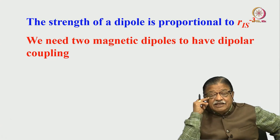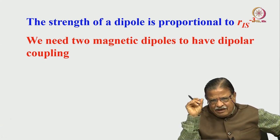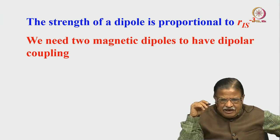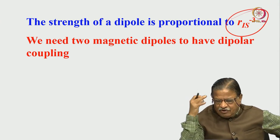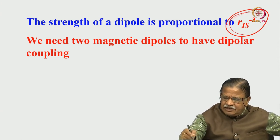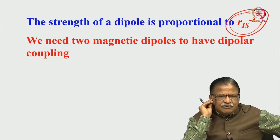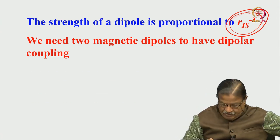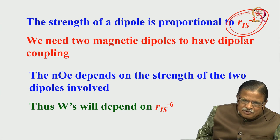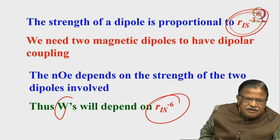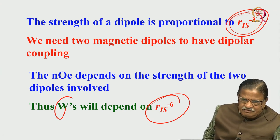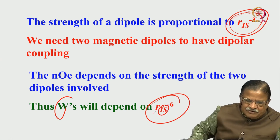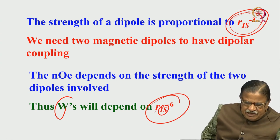Why r_ij to the power of 6? Consider the magnetic strength of a dipole: in dipole-dipole interaction, the field depends on 1/r_ij³. That is why it is r_ij to the power of minus 3. But for NOE we need two magnetic dipoles — dipole-dipole interaction involves two dipoles. Because of that, the transition probabilities W depend on r_ij to the power of 6, i.e., inversely proportional to r_ij⁶. That is the distance dependence of NOE.